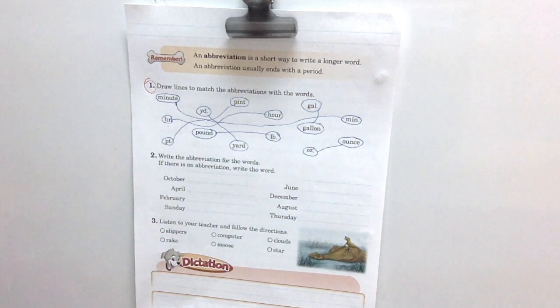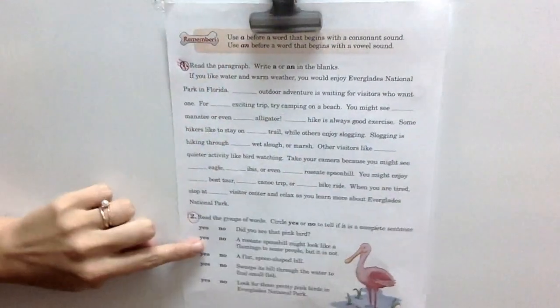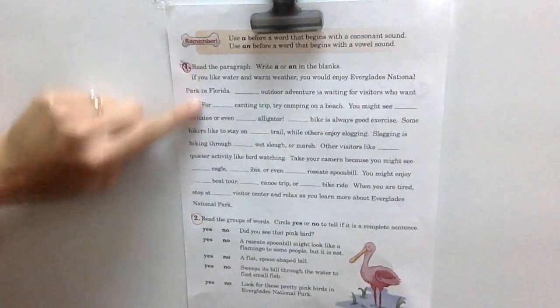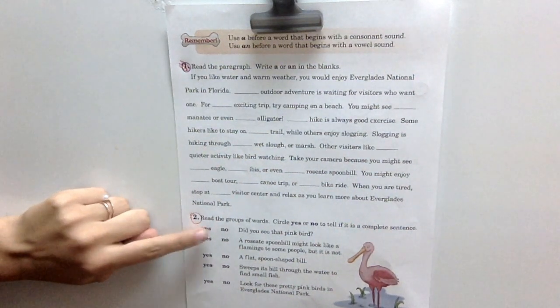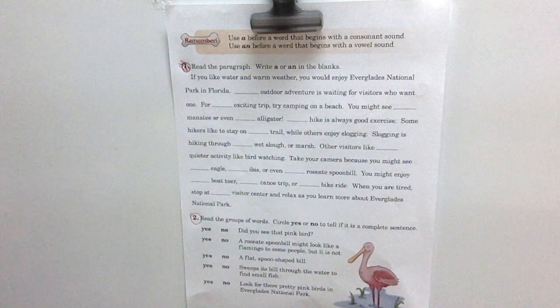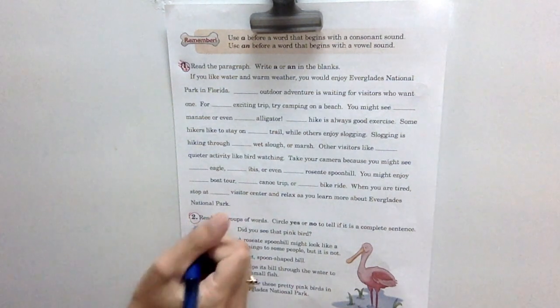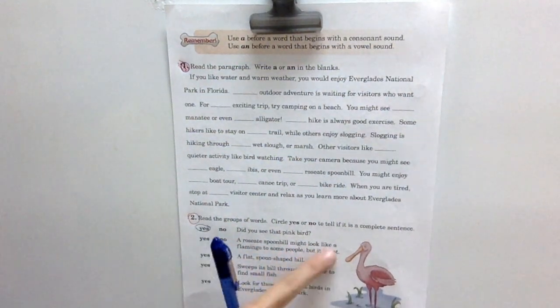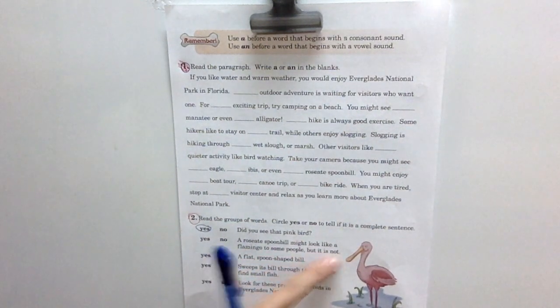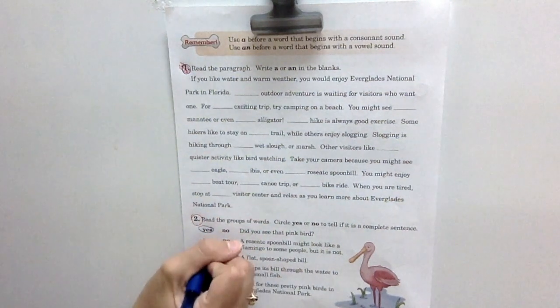Alright, let's go to page 272. We're going to be looking down here at the bottom because this is just a review of a and an and we've already done a review of that together. So down here at the bottom we're going to circle yes or no on if these sentences are complete. So this sentence, did you see that pink bird? Does it have a subject and a predicate? It does, yes. So it's a complete sentence. A roseate spoonbill might look like a flamingo to some people but it is not. Does it have a subject and a predicate? Does it sound complete? Yeah, it's got all the parts to it. Good.